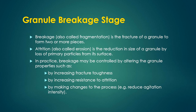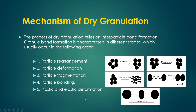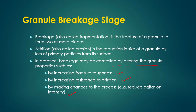In the granule breakage stage, breakage (also called fragmentation) is the fracture of a granule to form two or more pieces. Attrition (also called erosion) is the reduction in granule size by loss of primary particles from its surface. Breakage may be controlled by altering granule properties such as increasing fracture toughness, increasing resistance to attrition, or making process changes such as reducing agitation intensity. These cover the wet granulation process stages.